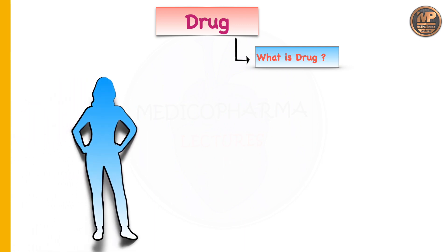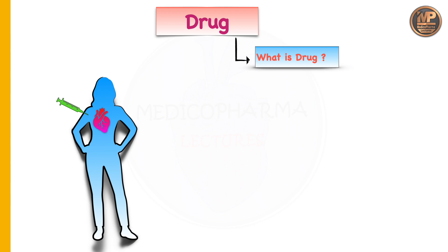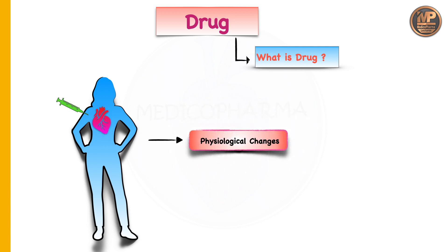Suppose this is a human body made of various organs and tissues. We will consider the heart — this heart is working normally, so we can say the heart is having normal physiology. Now suppose a substance is given or administered to this body, and due to this substance the heart started working in a different manner. The heart is now behaving or functioning differently, so we can say the heart is now having altered or changed physiology due to that substance.